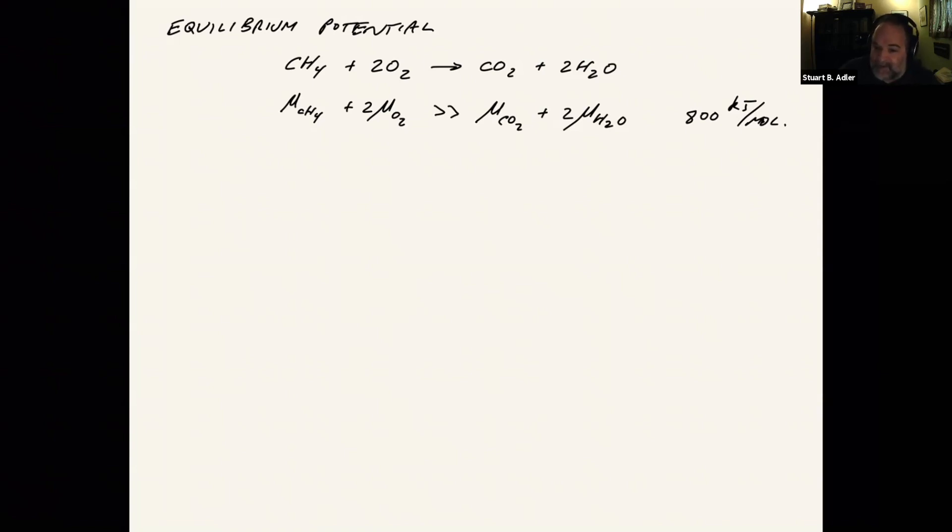It also tells us that this reaction is incredibly far from equilibrium. And as we were talking about last time, it means that there's going to be a huge amount of entropy generation when it occurs, if it occurs in a spontaneous way, as it would whenever we combust. So it's far from equilibrium. And sgen is much, much greater than zero if we do it as combustion.